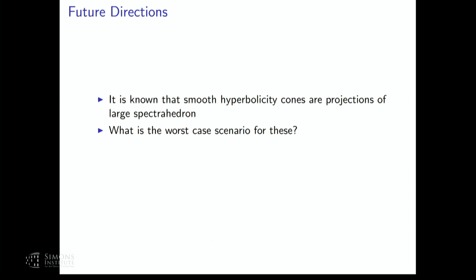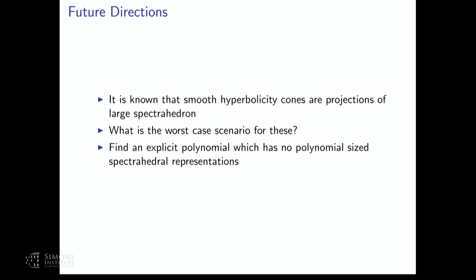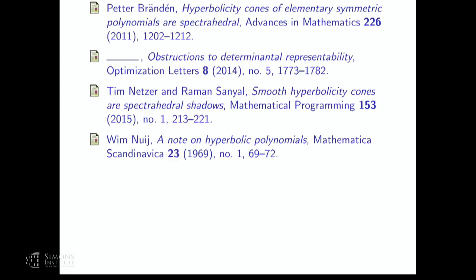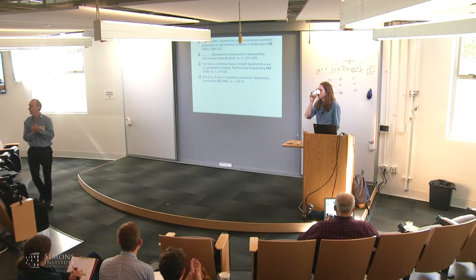Future directions: it's known that smooth hyperbolicity cones are projections of large spectrahedra — what is the worst-case scenario there? Can we say something generically for all smooth hyperbolicity cones? Another question: can we find an explicit polynomial? That would be really desirable, especially if that explicit polynomial had low complexity in hyperbolic programming.